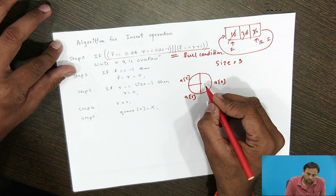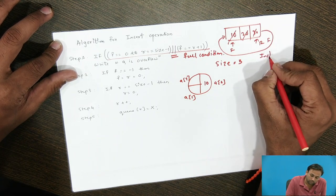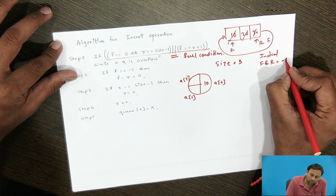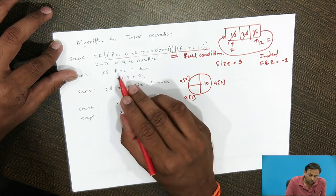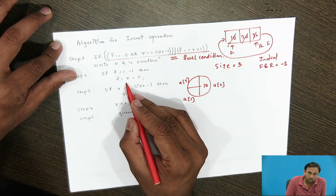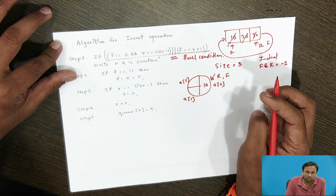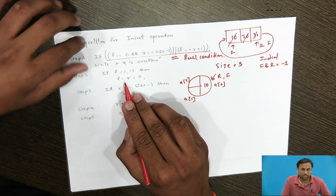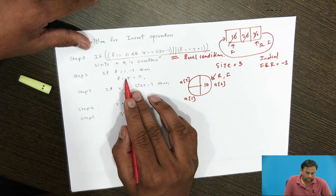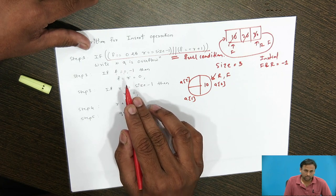Now we insert element 10. When inserting the first element, the initial F and R are equal to -1. When F == -1, we set F = 0 and R = 0, meaning both pointers are incremented by 1. This condition occurs only once — when we insert the first data into the circular queue.